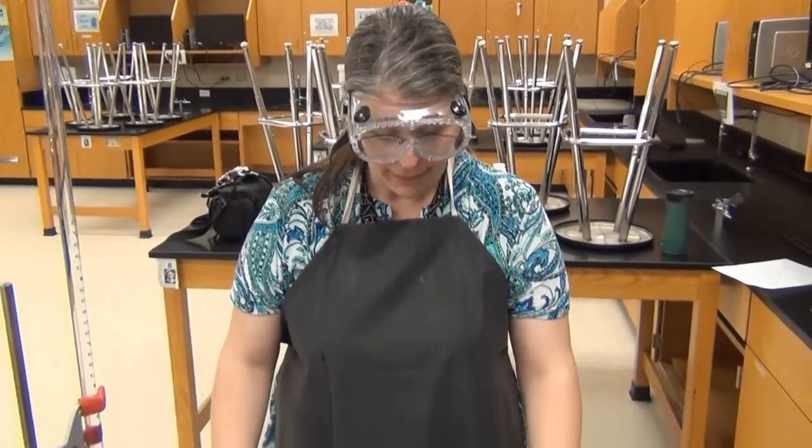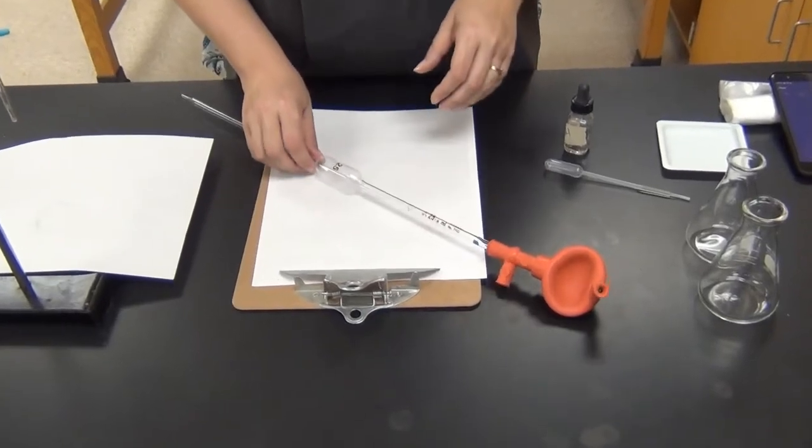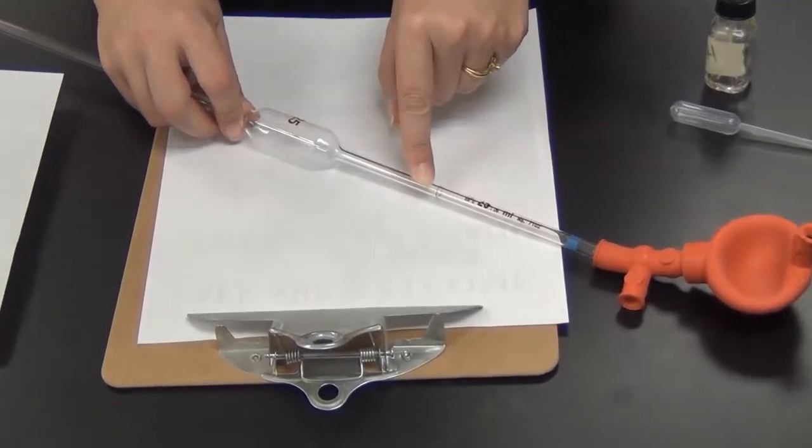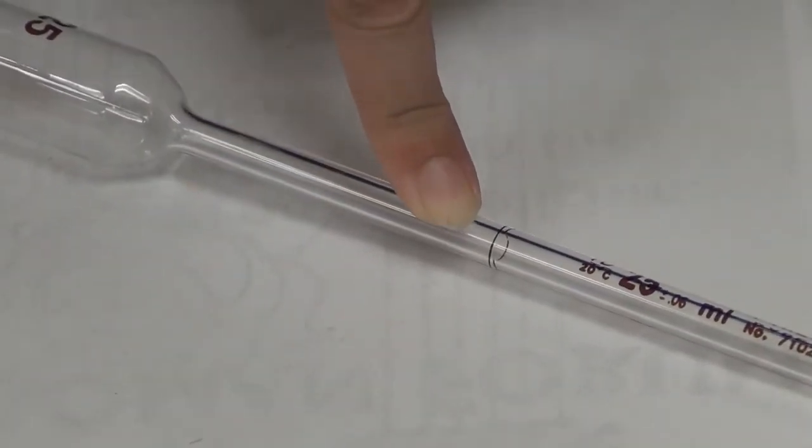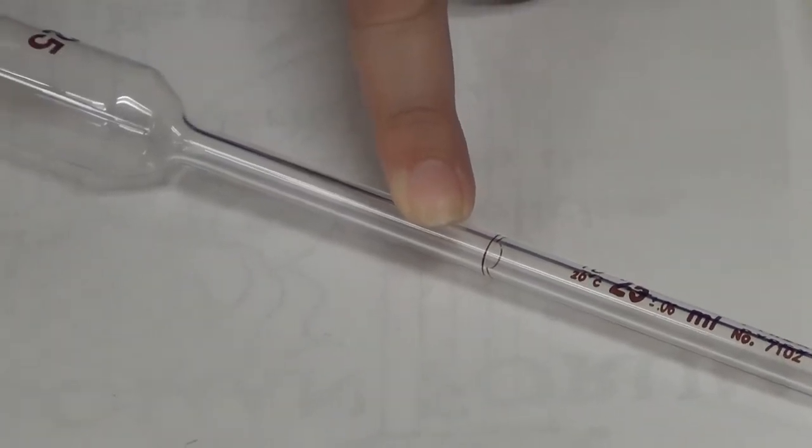This is a glass volumetric pipette, and it's very similar in ways to a volumetric flask, only it's for a smaller amount. If you look here it has exactly one, count it one, measurement mark, which means it does exactly one job. It measures 25 milliliters of solution.